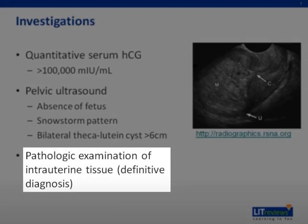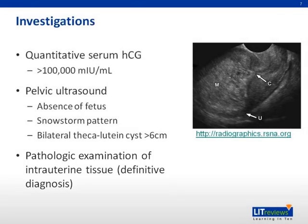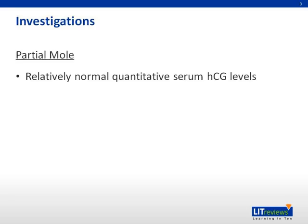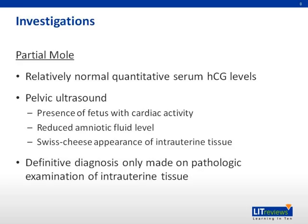However, the definitive diagnosis of molar pregnancy is made on pathological examination of intrauterine tissue after the uterus has been evacuated. In diagnosing an incomplete molar pregnancy, serum HCG levels are likely to be relatively normal. Pelvic ultrasound may reveal a fetus with a heartbeat. In addition, intrauterine tissue has a Swiss cheese appearance. Similar to complete moles, a definitive diagnosis can only be made on pathological examination of the intrauterine tissue after evacuation.